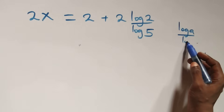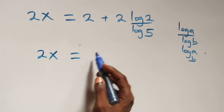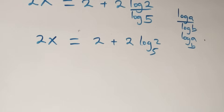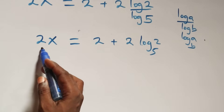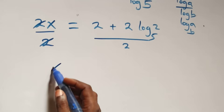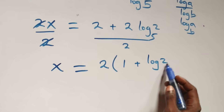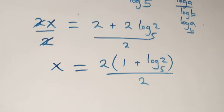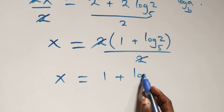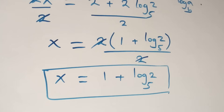Using the change of base rule, log a over log c is the same thing as log a to base c. So here, log 2 over log 5 is the same as log base 5 of 2. So 2x equals 2 plus 2 log base 5 of 2. Dividing both sides by 2, with 2 factored out as common, 2 cancels, and we have x equals 1 plus log base 5 of 2.